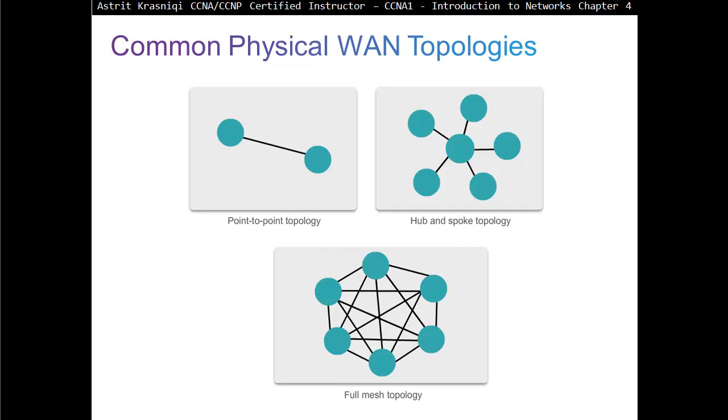Common physical wide area network topologies: point-to-point topologies have two devices or routers in a point-to-point connection. Then we have hub and spoke topology with a hub in the middle connected to spokes. Then we have full mesh where every connection or every spoke is connected to every other spoke.